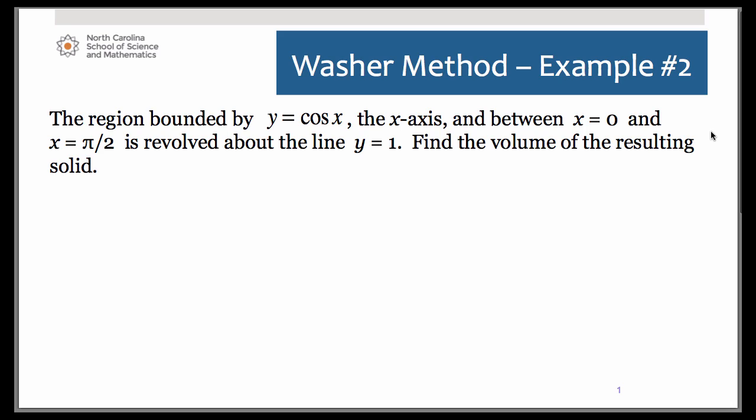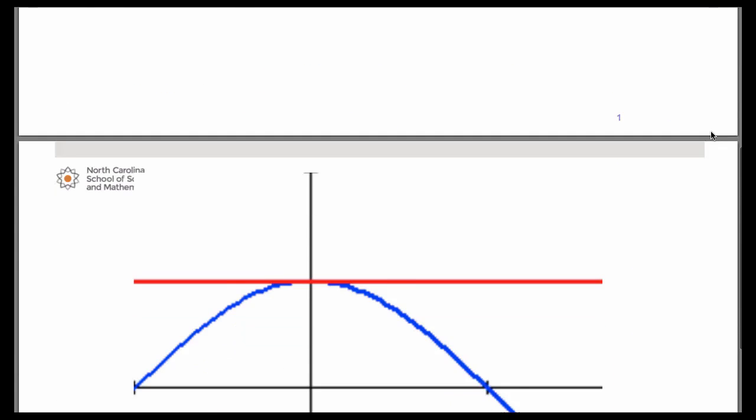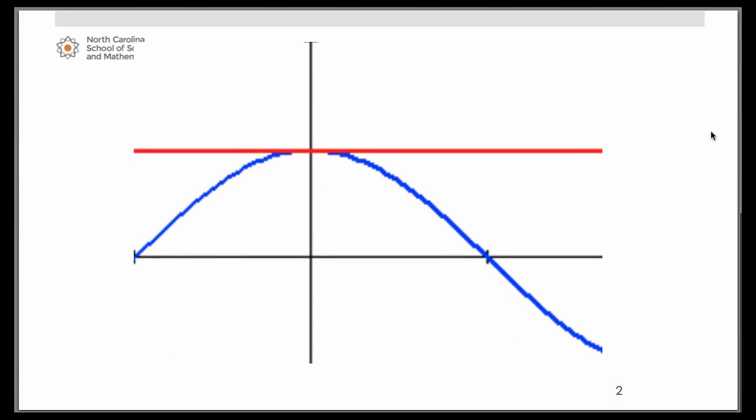So go ahead and graph it on your graphing calculator. I've already gone ahead and done so and taken a snapshot of the graph for you. I did adjust my window a little bit. I did zoom trig the first time. This intersection right here where the trig function hits the x-axis of course is pi over two. This is negative pi over two over here. Here is your horizontal line y equals one, which happens to be our axis of revolution also.